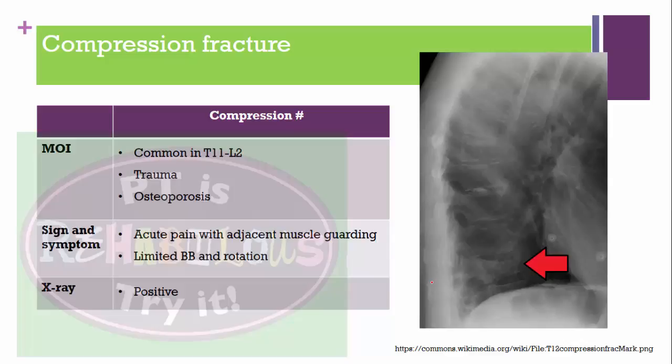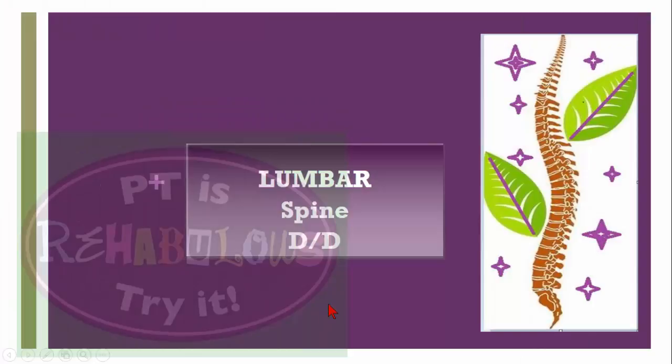Compression fracture of the thoracic spine is most common at T11-T12. Causes include trauma and osteoporosis. Signs and symptoms include acute pain with adjacent muscle guarding and limited extension and rotation. X-ray is the diagnostic feature and will be positive.